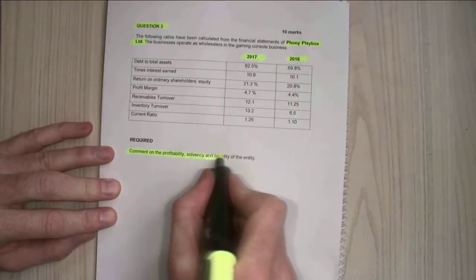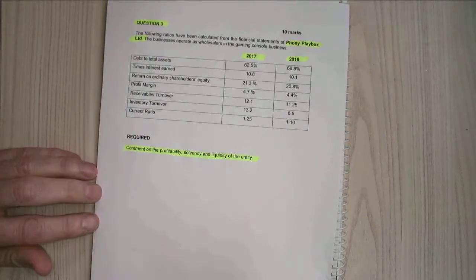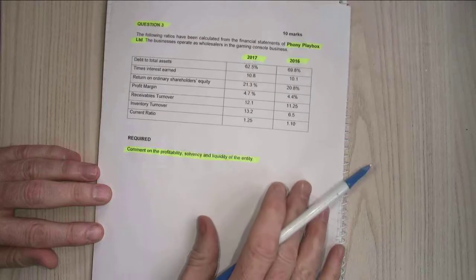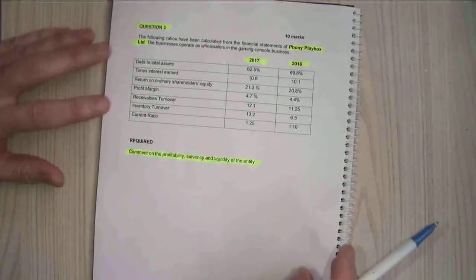The requirement is to comment on the profitability, solvency and liquidity of the business. So we need to look at these in relation to what's profitability, what's solvency, what's liquidity.